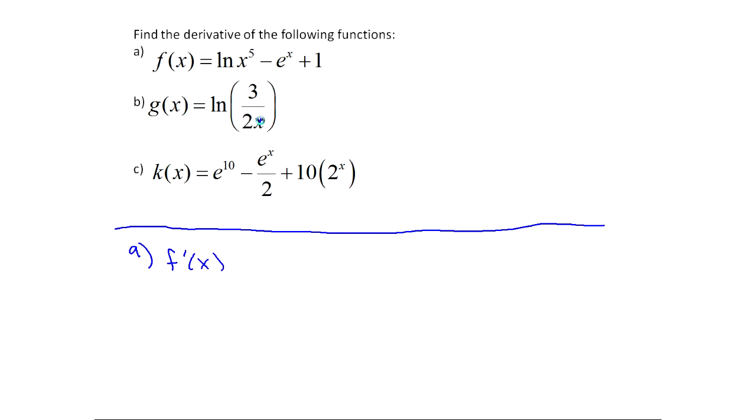We're going to rewrite, kind of like we did with the power rule. I'm going to rewrite this so I'm not doing calculus at this step. When I have a power inside of the log like that I can bring it out. So this is actually 5 ln x minus e to the x plus 1.